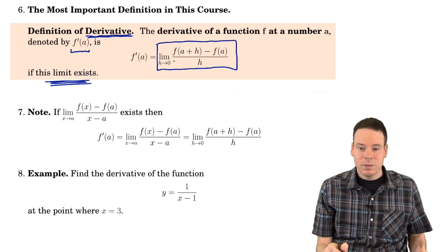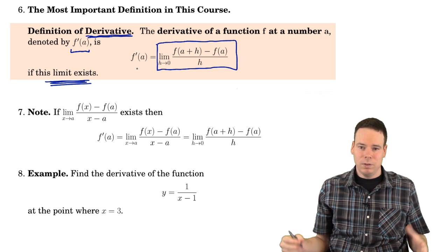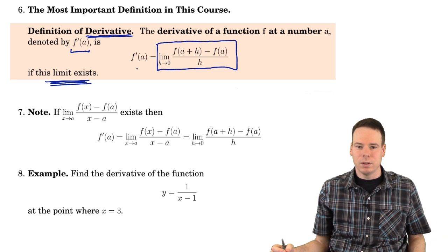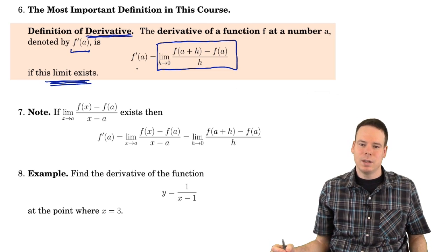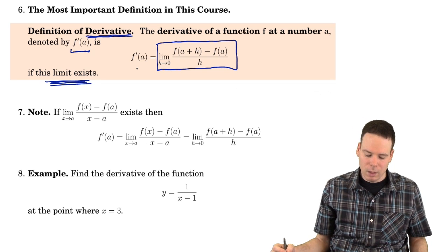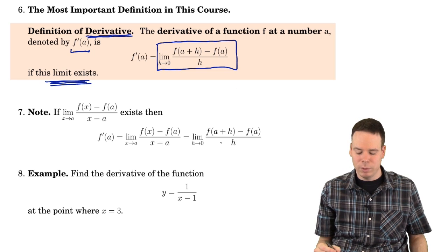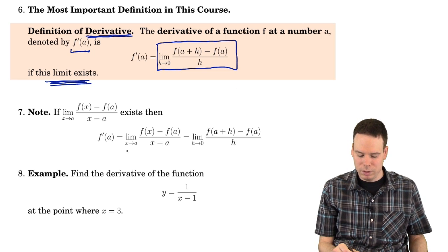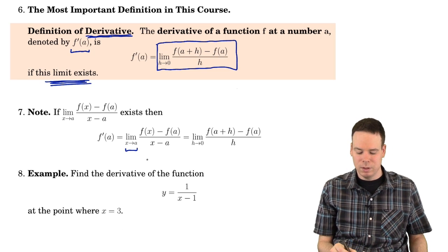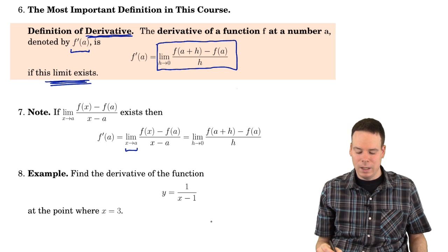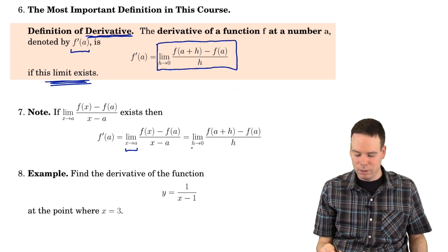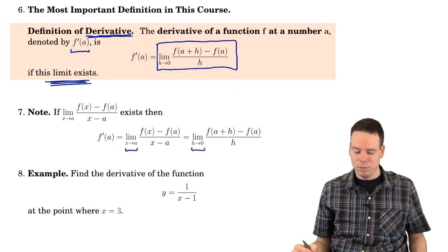Another way of saying this is: we know this limit is the slope of the tangent line, so really the derivative is the slope of the tangent line. The derivative is the name we're giving to the slope of the tangent line at a point on the curve. We had two different limit definitions for the slope of the tangent line, depending on whether we use the x-going-to-a notation or the h notation.